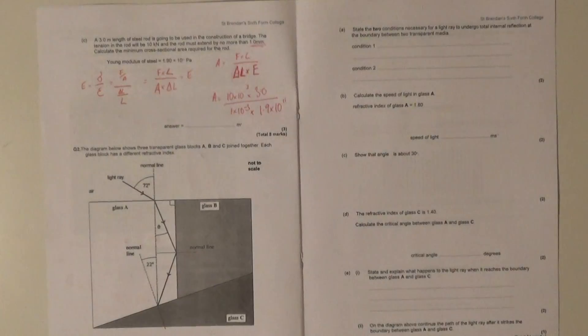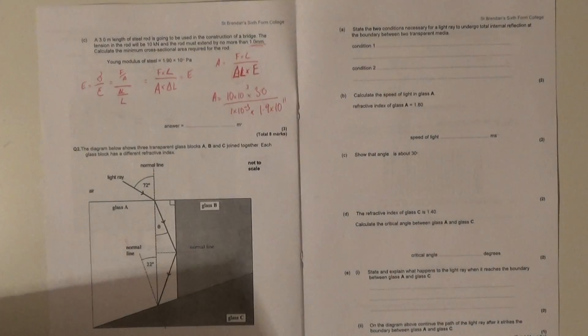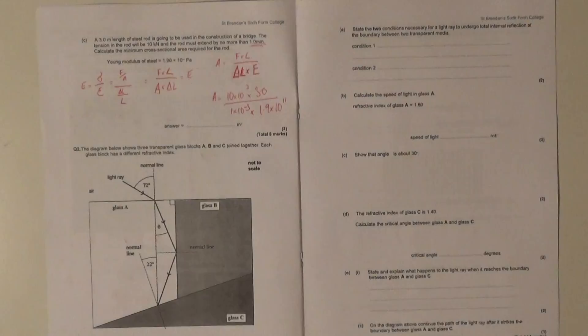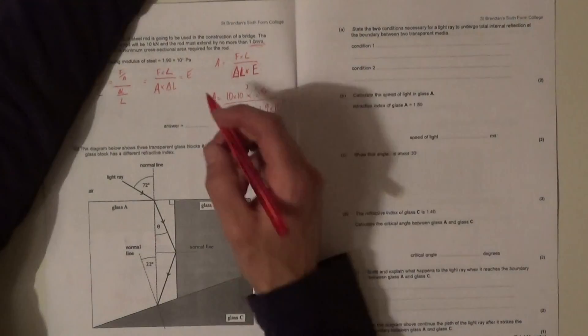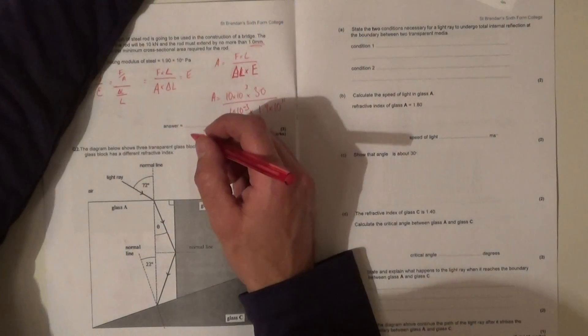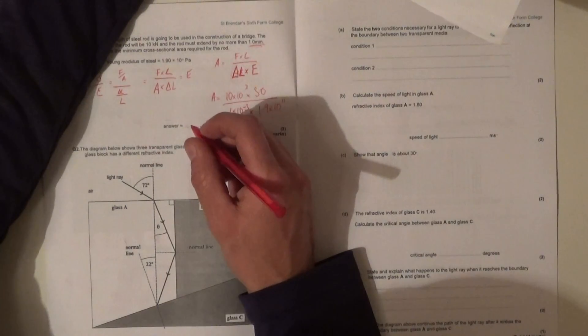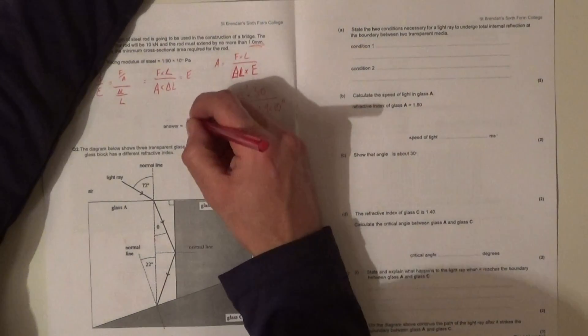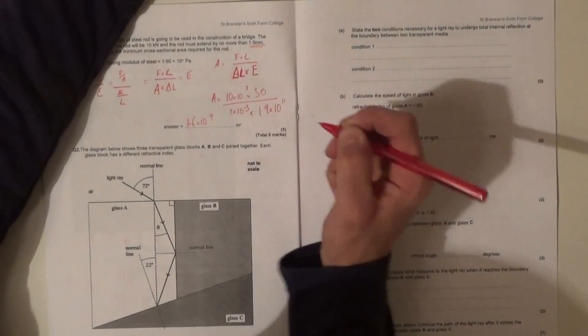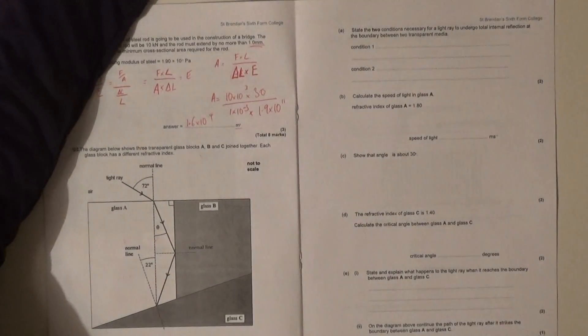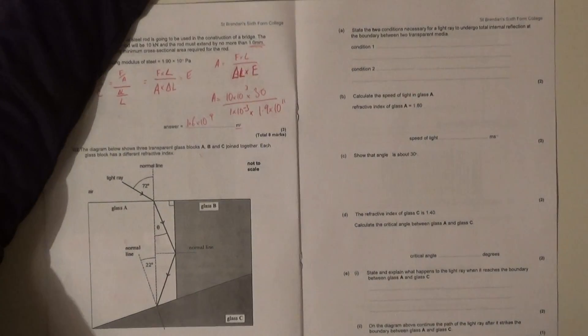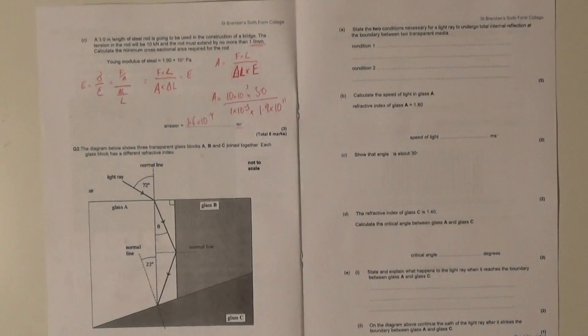And then multiply that of course by the Young's modulus which is 1.9 times 10 to the 11. Notice that even though that's given to 3 sig fig I dropped it because everything else is to 2. So there we go. Once you do that you should be able to calculate the answer. I'll tell you what it is: basically it comes out to 1.579, so really what you want is 1.6 times 10 to the minus 4 meters squared. So that is question number one.